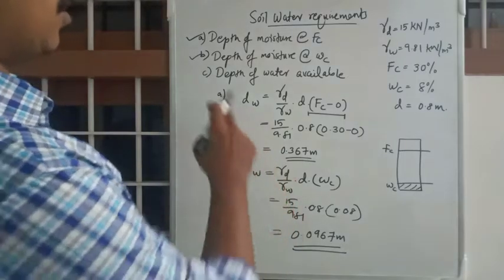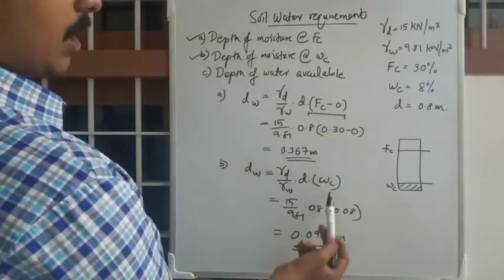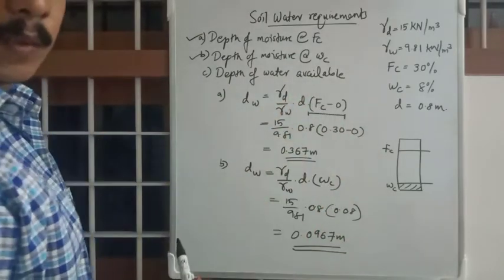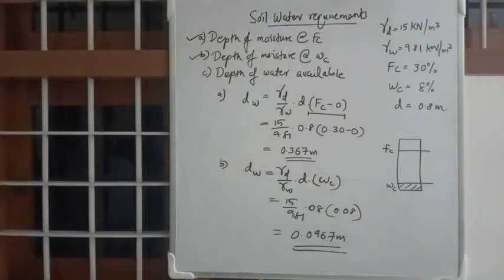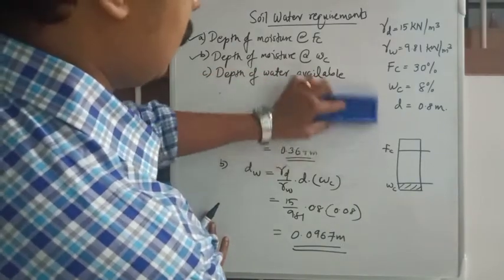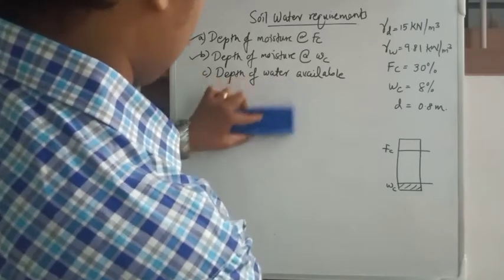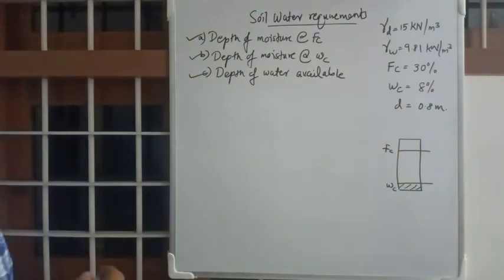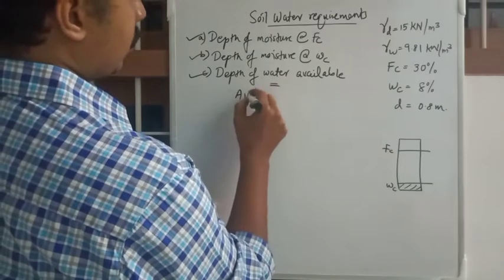So that is how we found the first two sub-questions — depth of moisture at FC and depth of moisture at WC. We simply changed the moisture content term in the equation according to each sub-question. Now we are going to examine the third one: depth of available water.